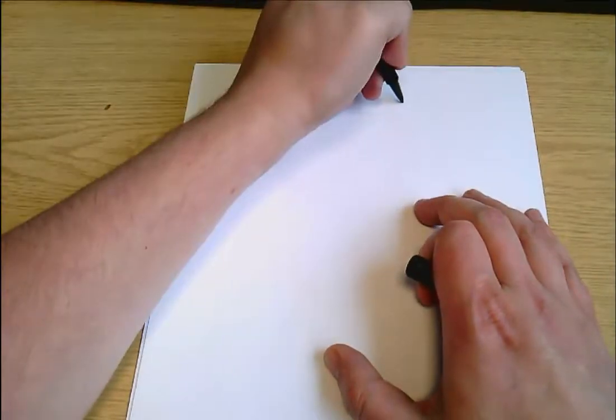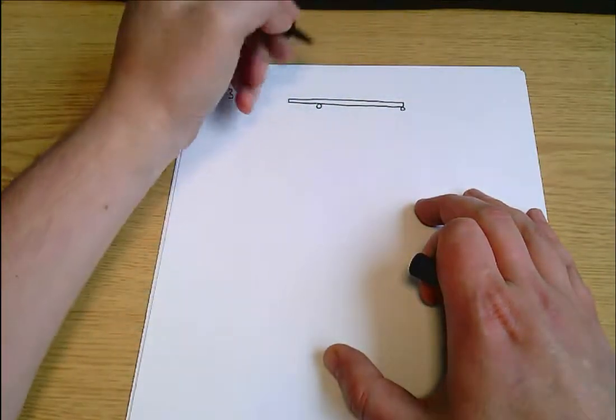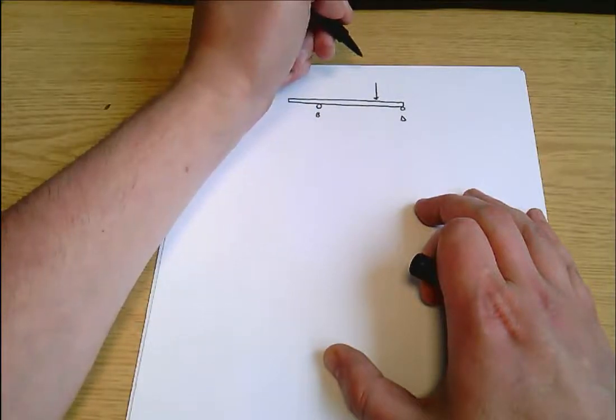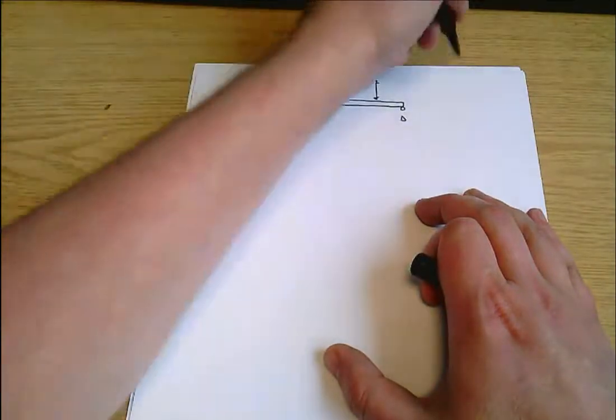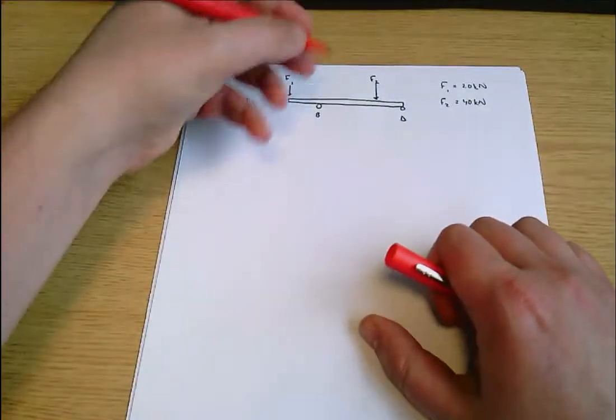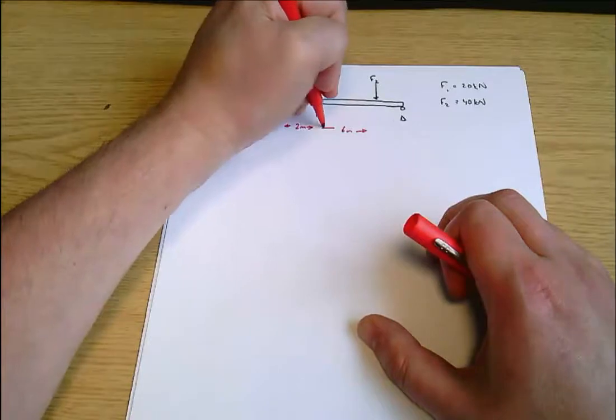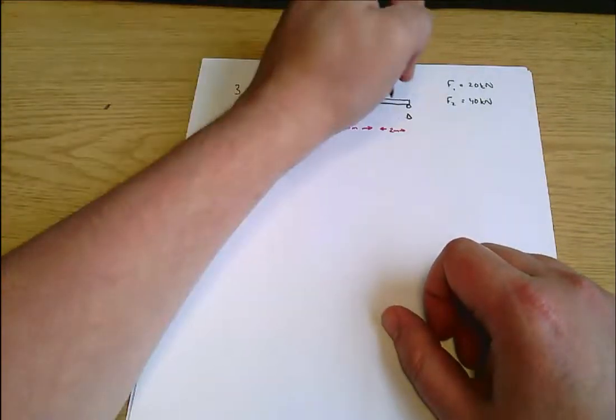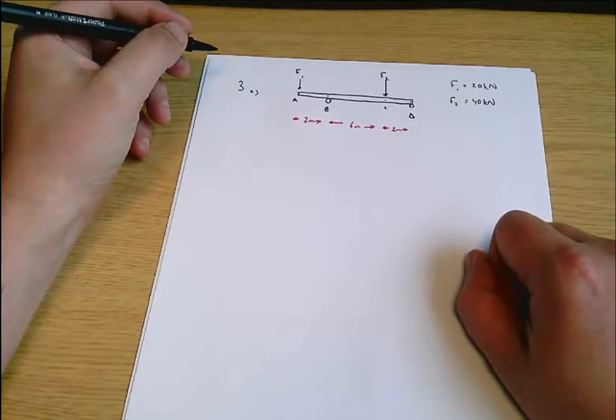3A, the beam in question looks like this. That's point B and point D. There is a load there, F2, and a load here, F1. We're told F1 equals 20 kilonewtons, F2 equals 40 kilonewtons. We can mark some distances onto this beam. This is 2 meters from A to B, 6 meters from B to C, and another 2 meters there. Just mark on that we're calling this point A and this point C. So that's the setup of the problem.